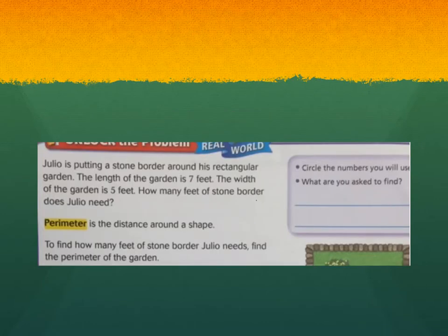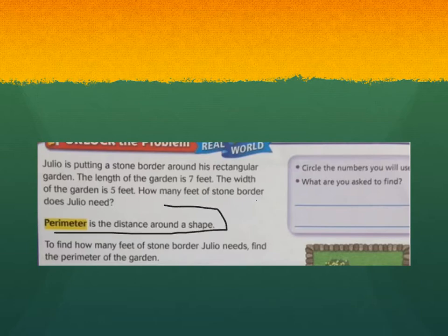So let's start with a question. Julio is putting a stone border around his rectangular garden. The length of the garden is seven feet. The width of the garden is five feet. How many feet of stone border does Julio need? So remember that perimeter is the distance around a shape. If you haven't already included that definition in your notes this week, I would definitely pause the video right now and write the definition of perimeter.